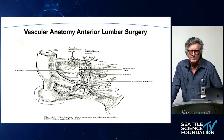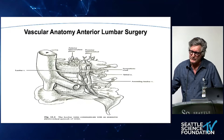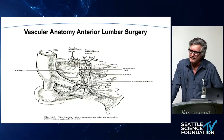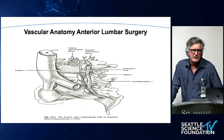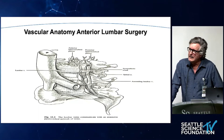The L5 nerve root always runs deep to the iliolumbar vein. Be very careful if you lose control of it deep in the tissues — don't blindly place clips down there. One neurosurgeon I worked with at the University of Florida felt that metal near the nerve was not a good idea. I like to try to tie the vein off, and I always make sure to actually see it so I know exactly where it is.